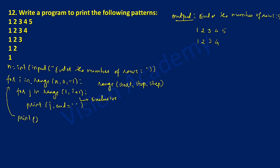Control transfers to the outer for loop again, decrementing i by 1 — now i is 3. The inner for loop starts from j equals 1, and 3 plus 1 is 4 which is exclusive, so it stops at 3. It prints 1, 2, and 3. Then this print statement executes so the cursor comes down to the next line.